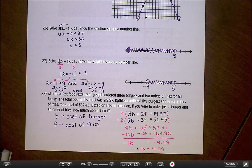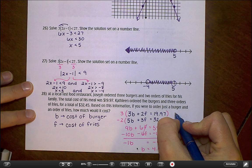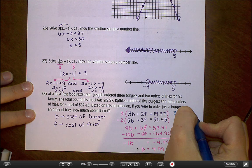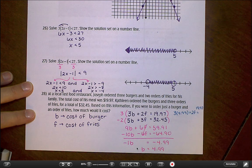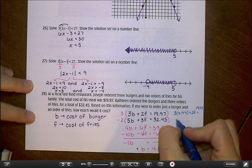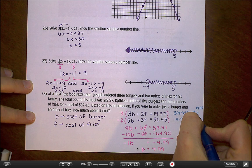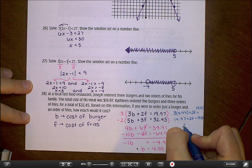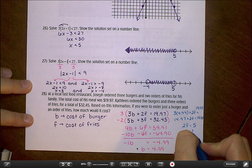Now we should be able to go back and use one of these equations to figure out what the cost of an order of fries would be. I'll just use maybe that top equation, the 3B plus 2F. So really what I'm doing is 3 times 4.99 plus 2F equals that 19.97. 3 times 4.99 is 14.97. Subtract that 14.97, and I get that 2F is equal to $5, and then divide by 2, and I get that the cost of an order of fries is $2.50.